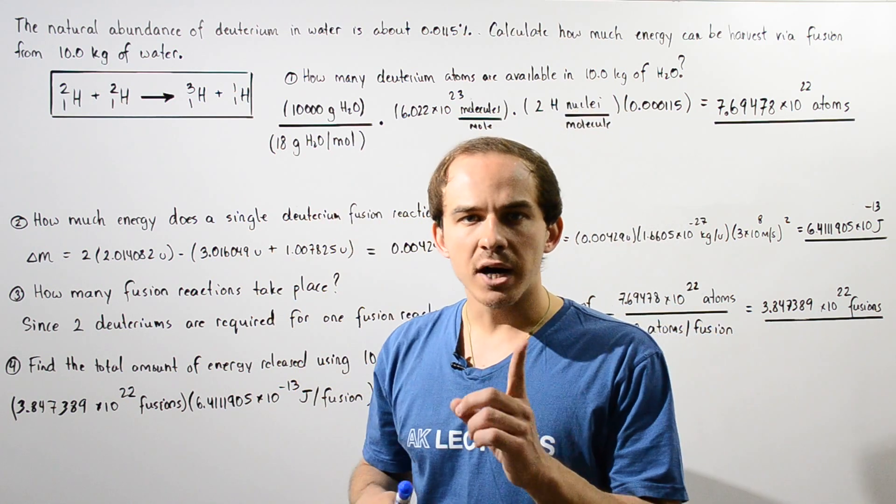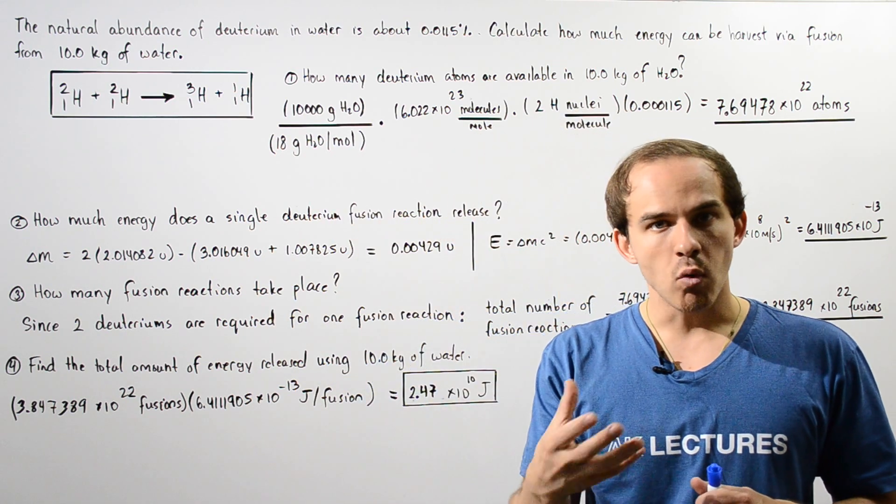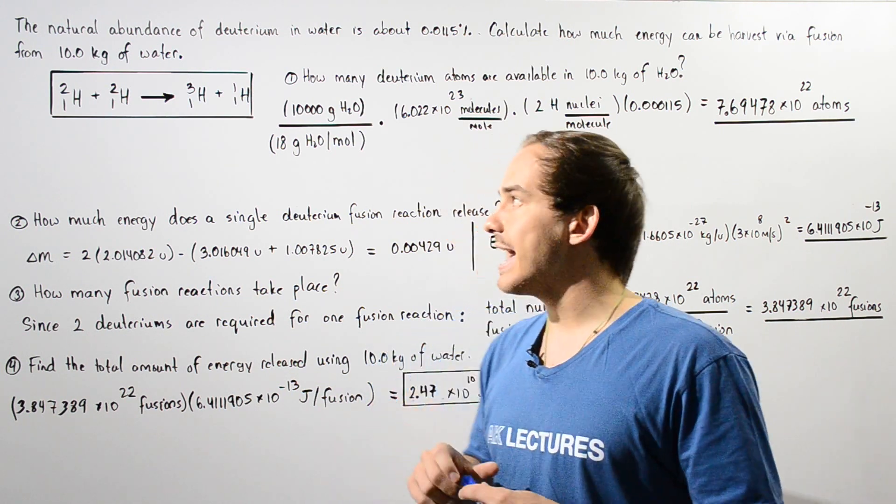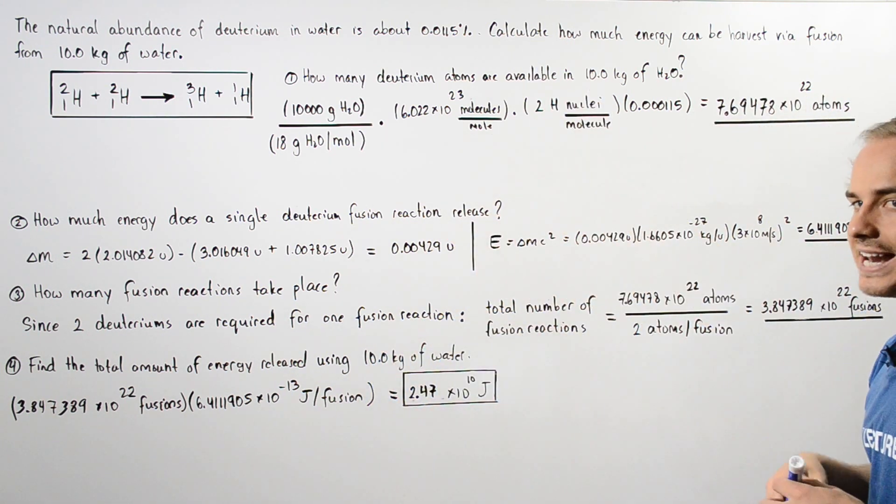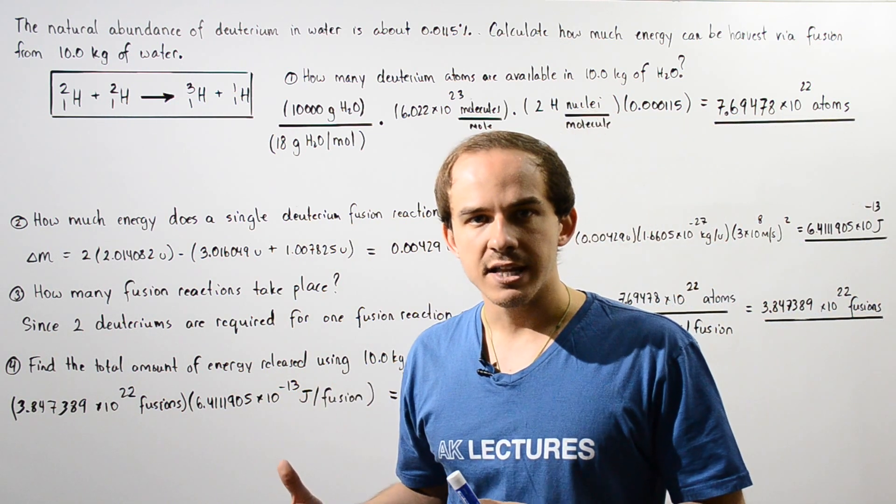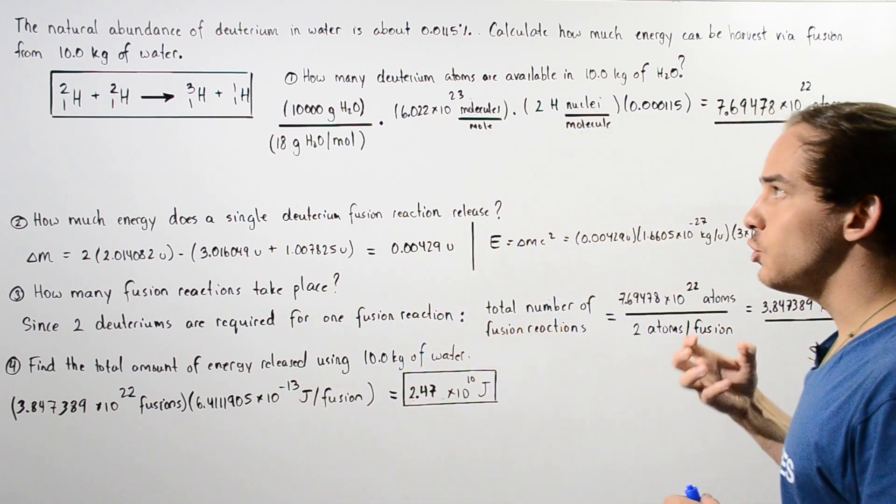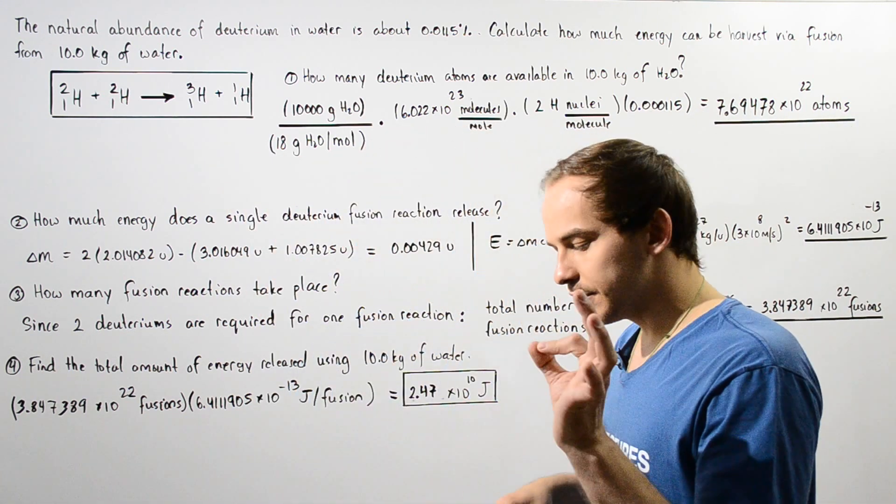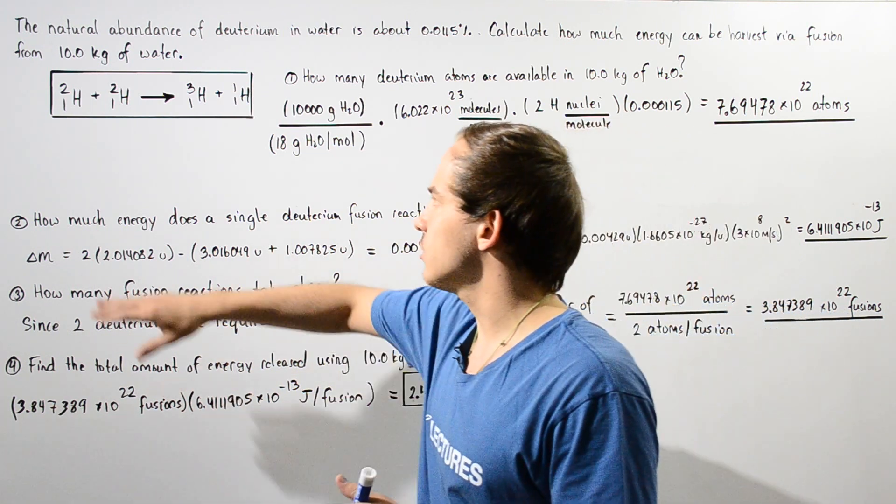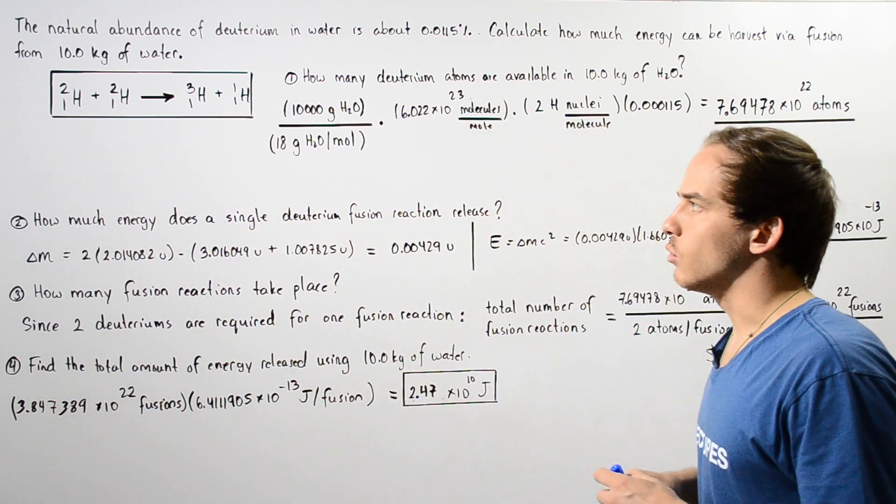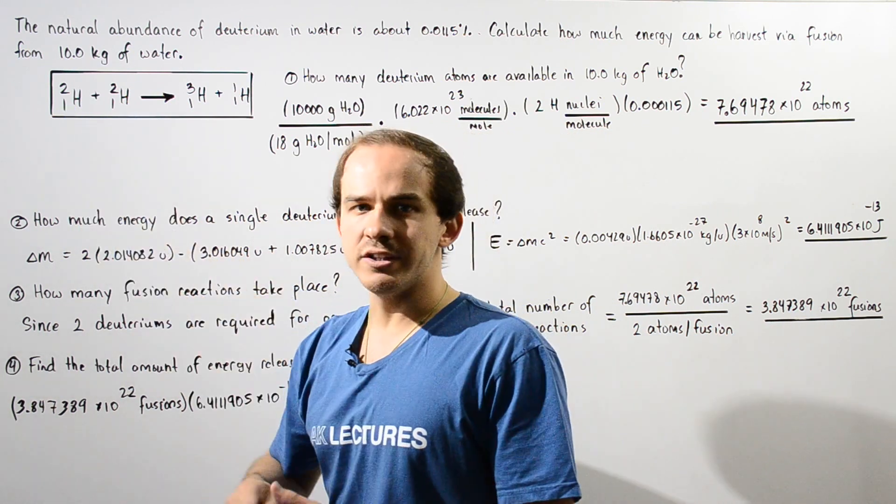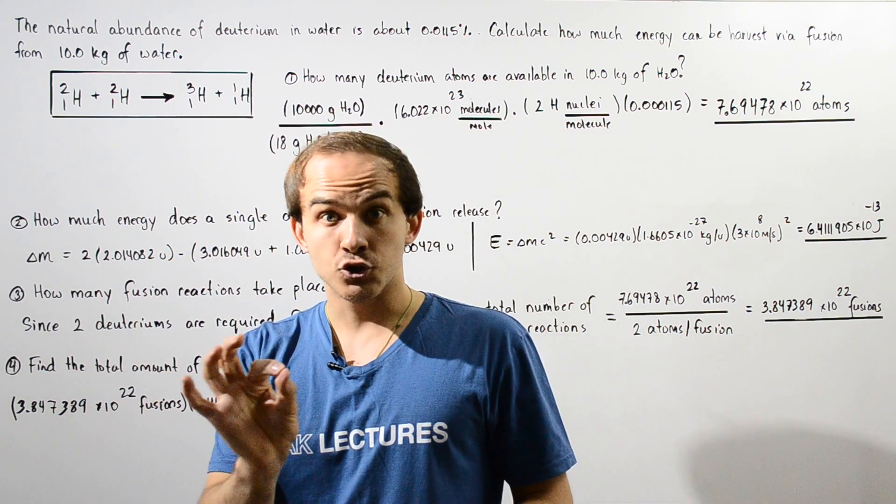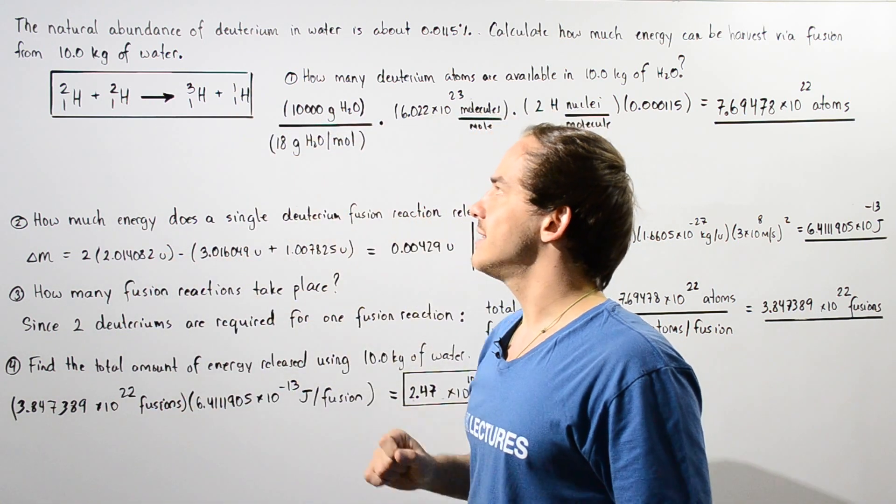The natural abundance of deuterium in water is about 0.0115% on average. Calculate how much energy can be harvested in the nuclear fusion reaction of 10 kilograms of water. And the specific nuclear fusion reaction that we are considering is shown in the following box. So we have two individual deuterium atoms that fuse or combine to form tritium as well as a hydrogen atom.